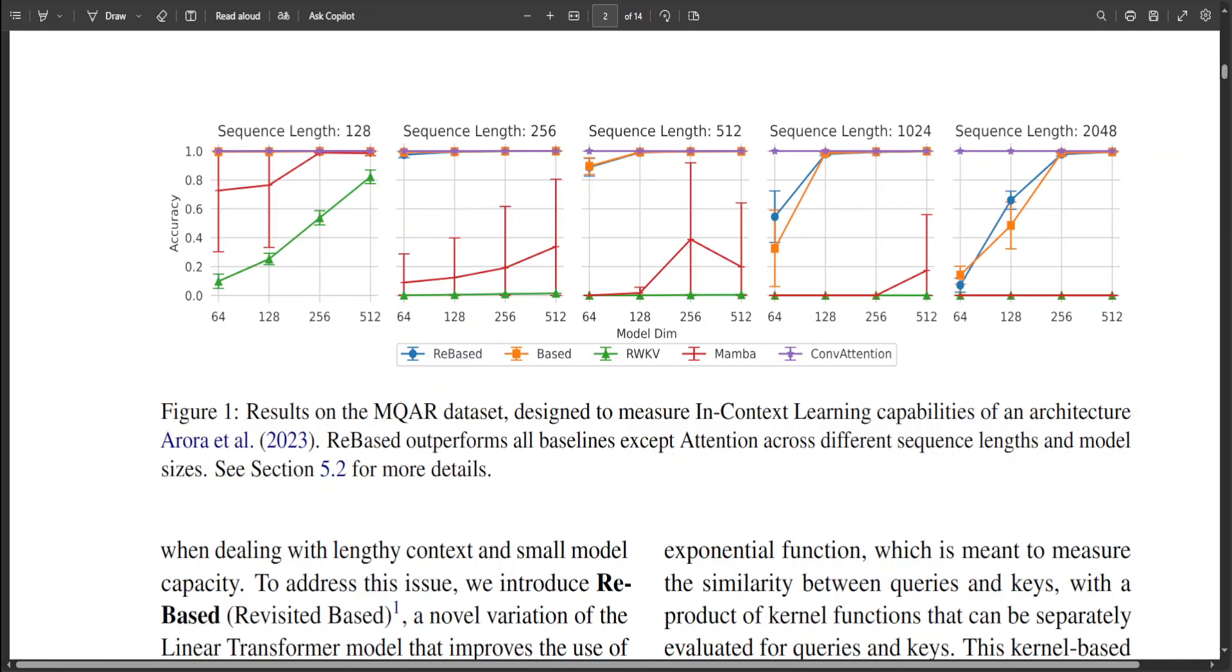Moreover, in their experiments conducted on much more complicated MQAR setups than those used in the Based blog post, there are many examples. For instance, Based conducted experiments on 16 pairs with sequence length 256, whereas they used 64 pairs.